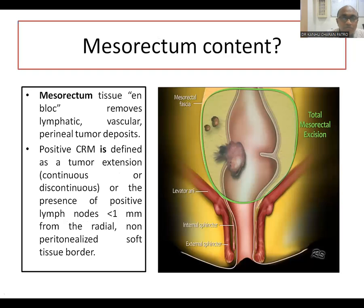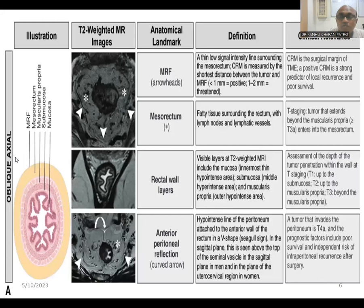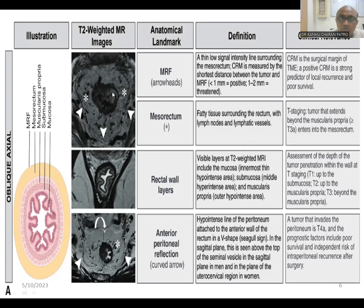The mesorectal envelope encloses lymphatic and vascular structures, as well as peritoneal deposits in the context of rectal tumors. A positive circumferential resection margin is defined as tumor extension or the presence of positive lymph nodes less than one millimeter from the radial non-peritoneal subserosa tissue border. The circumferential resection margin is the surgical margin for total mesorectal excision and is a strong predictor of local recurrence and poor survival. Perilumal spreading to the mesorectum also helps in tumor staging.